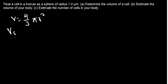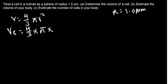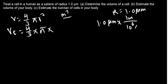So we are going to say that Vc, the volume of the cell, is equal to (4/3) times π times R³. We have the radius, which is 1.0 micrometers. First, we need to convert this into meters, because the answer for volume should be in cubic meters. Using dimensional analysis: 1.0 micrometer times (1 meter / 10⁶ micrometers). Micrometers cancel, giving us the radius in meters.